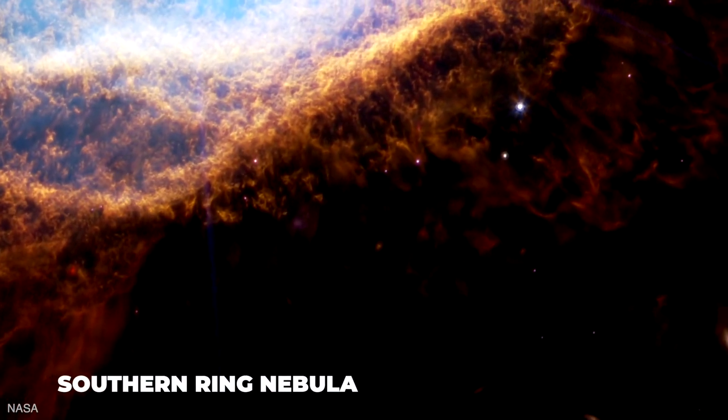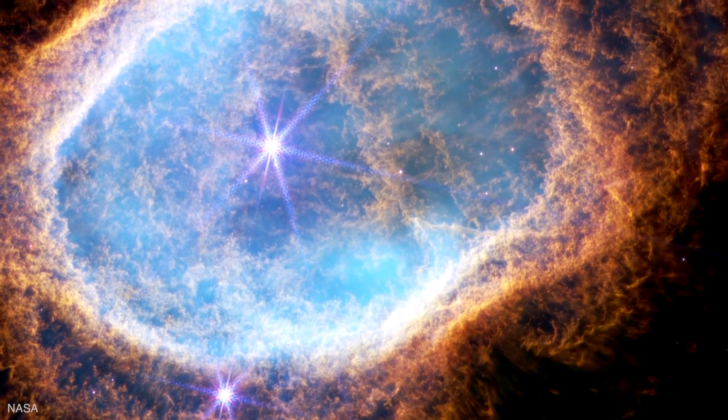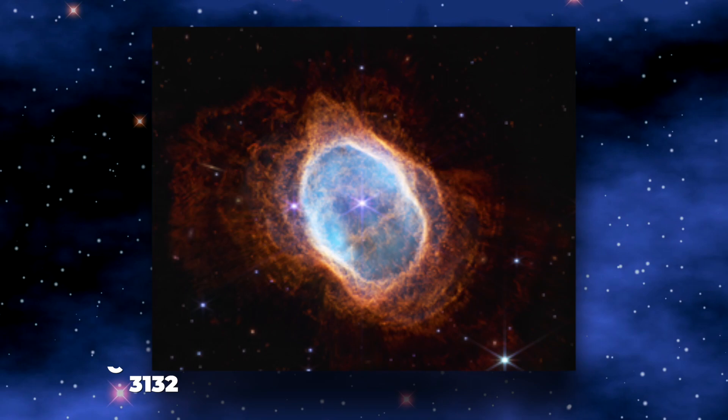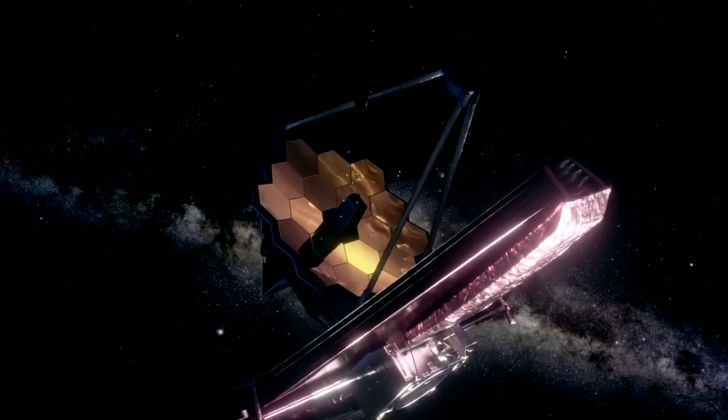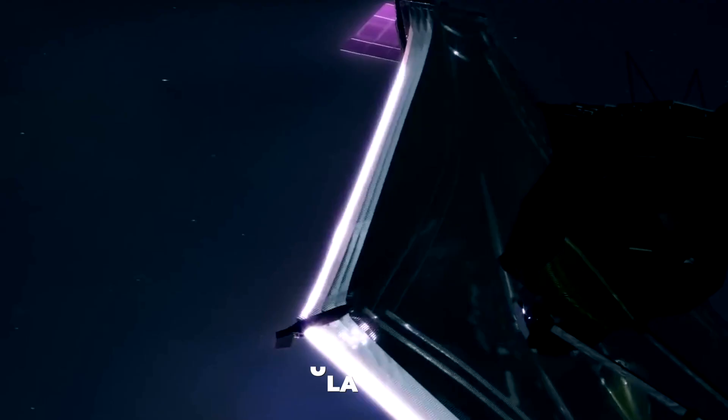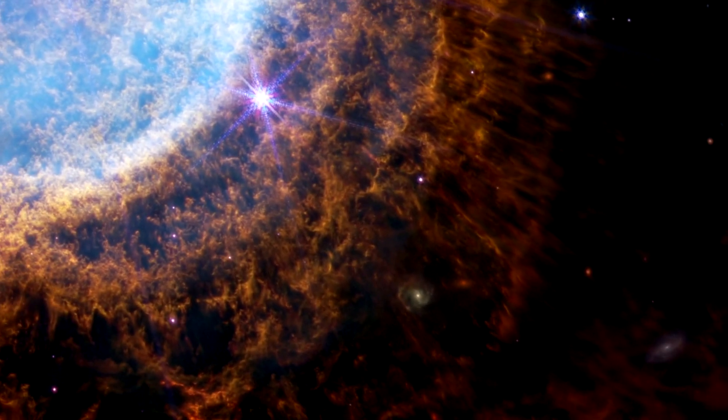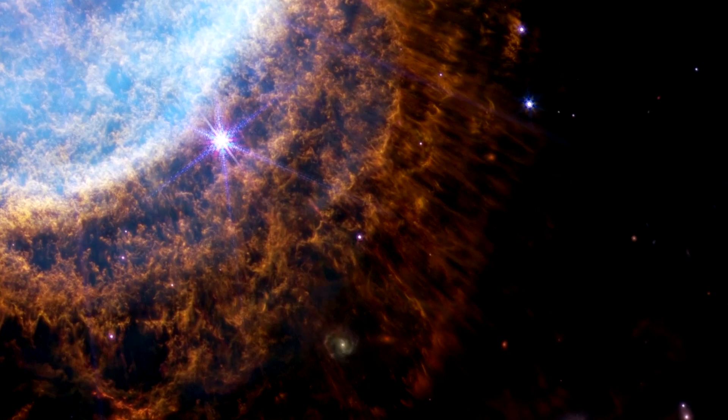Southern Ring Nebula is an expanding gas that surrounds a dying star. It is also known as Eight Burst Nebula, NGC 3132. In 2022, it became one of the first targets of NASA's JWST. The name Eight Burst Nebula comes from the nebula's appearance, which resembles Figure 8 in some telescopes and has been nicknamed Southern Ring Nebula because of its resemblance to Ring Nebula in the northern constellation Lyra.